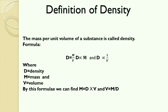Density describes how tightly packed mass is in a certain amount of space. From the formula, density is directly proportional to the mass of a substance — if the mass is more, the density will be more, and if the mass is less, the density will be less. On the other hand, density is inversely proportional to volume — if the volume is less the density will be more, and if the volume is more the density will be less.